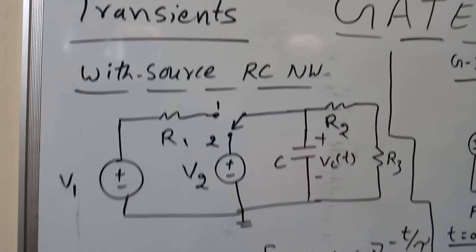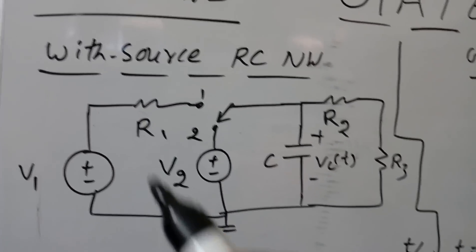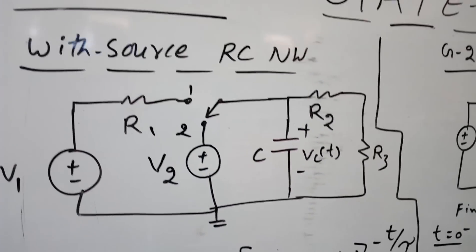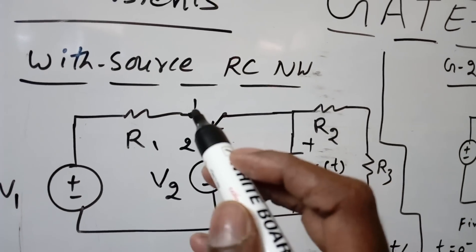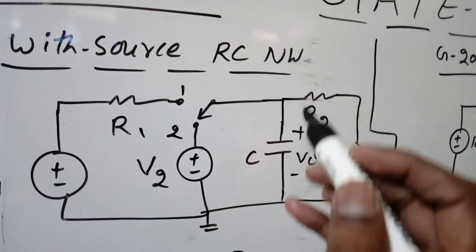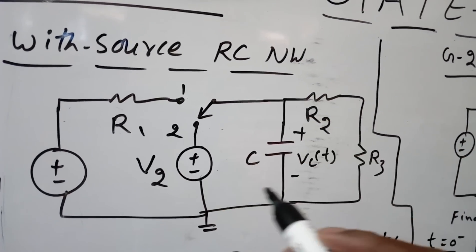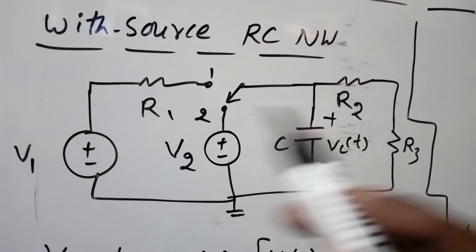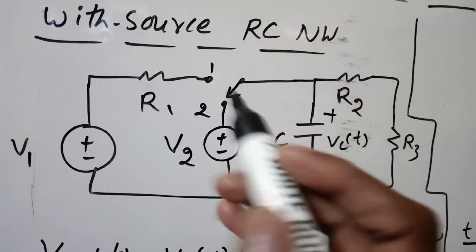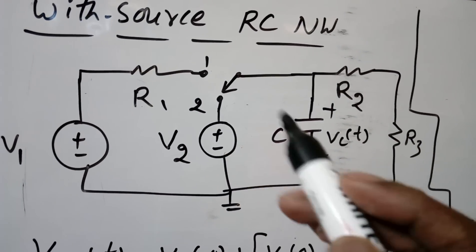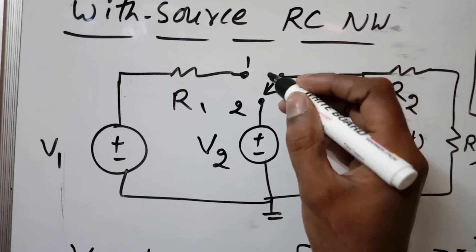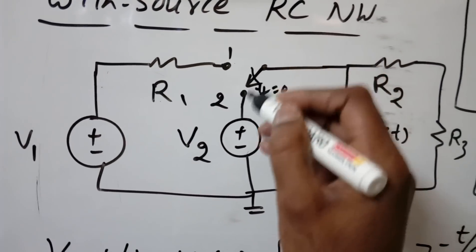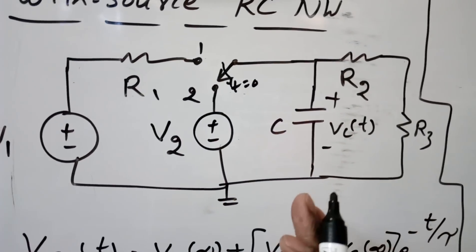In this lecture I am going to explain the with-source RC network. Previously we have seen whenever the switch moves from one position to another, the remaining circuit becomes source-free. Now when the source is present — when t less than 0 the source is there, and when t equal to 0 the switch moves to position 2 — that means it contains two sources.